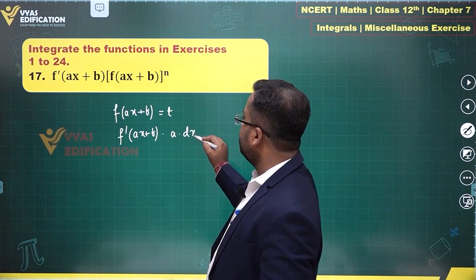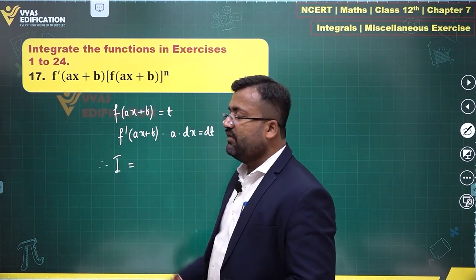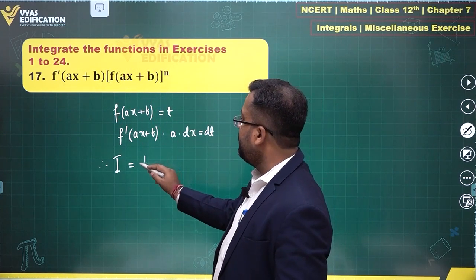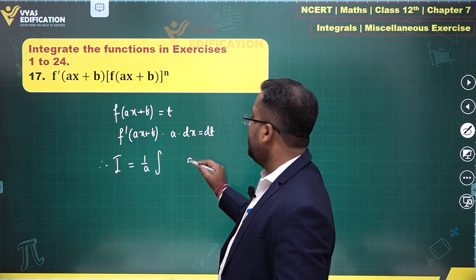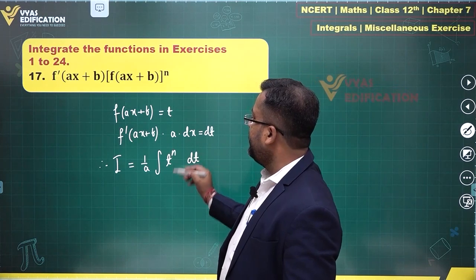times a dx is equal to dt. Therefore, the integral will be equal to f prime ax plus b dx will be 1 by a dt, f of ax plus b is t, this will be t power n.